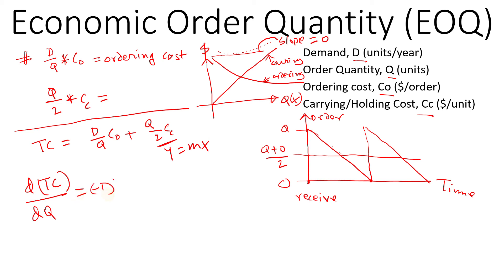So that will be minus C0 times D over Q squared plus CC over two. If we set this to zero, because the slope is zero at the optimum level of cost to minimize the cost, and then minus C0 D over Q squared equals minus CC over two.